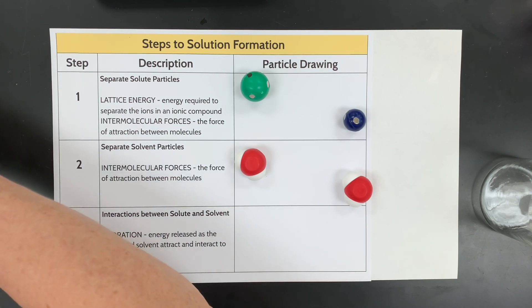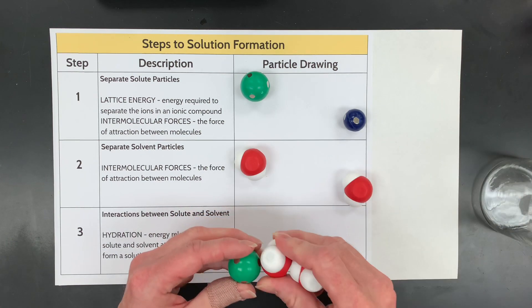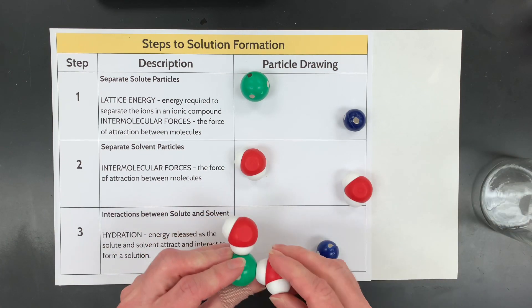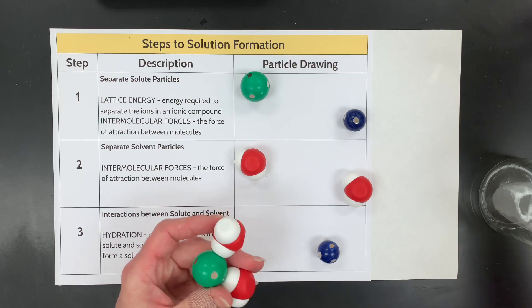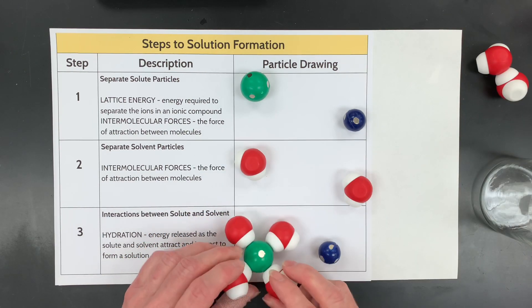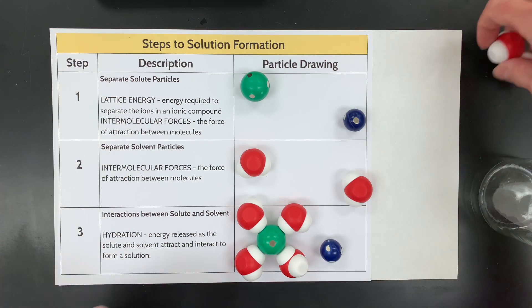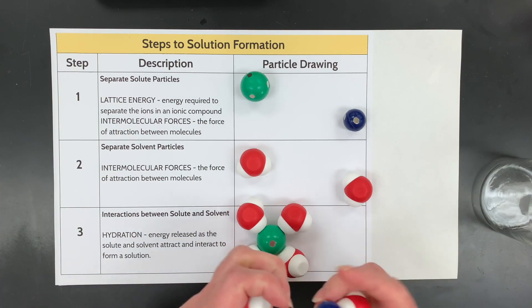If you look at my waters here, I have to pull those kind of apart from each other so that they can interact now with the solute. So then the third step, the third step is going to be saying, well, now they can interact. This is called the hydration step, and this is an exothermic step. So this is endothermic, endothermic, exothermic in terms of energy or what's called enthalpy.